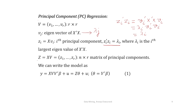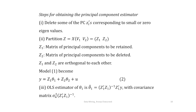Writing Z = XV = [z₁, z₂, …, zᵣ], this is the n×r matrix of principal components. We write the model as y = XV V'β + u = Zθ + u, where Z = XV and θ = V'β, since VV' = I. So we get the model y = Zθ + u.